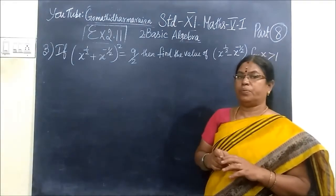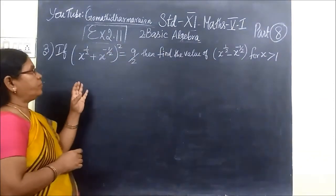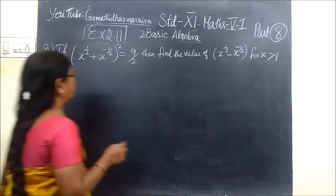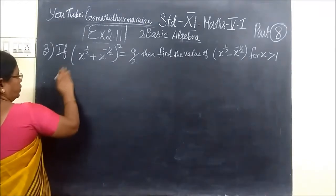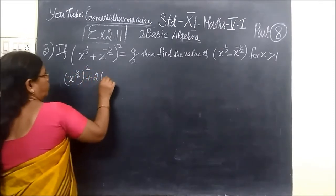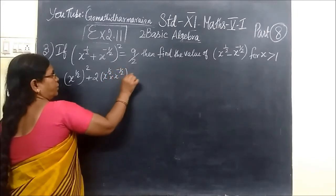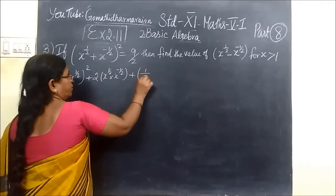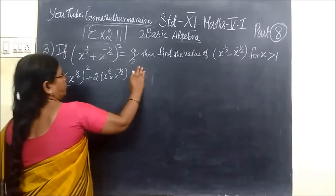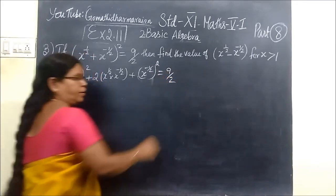In the last class we have seen up to problems 1 and 2. Now it is given: if x^(1/2) + x^(-1/2) whole square equals 9/2, then find the value. So this is of the form (a + b) whole square, so you can write it as a² + 2ab + b². This is equal to 9/2.